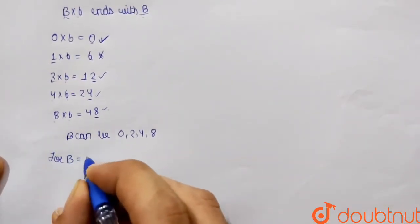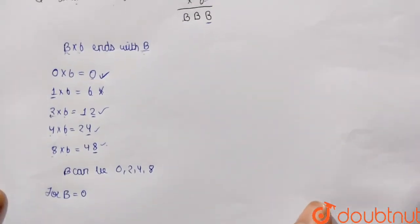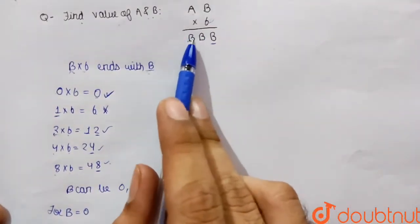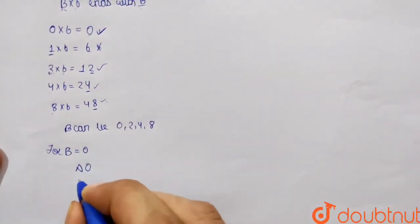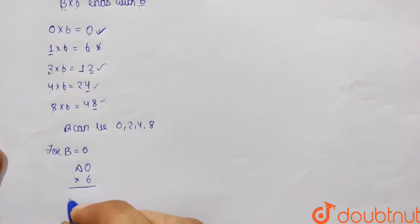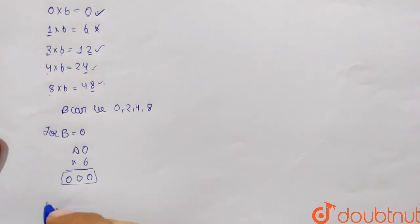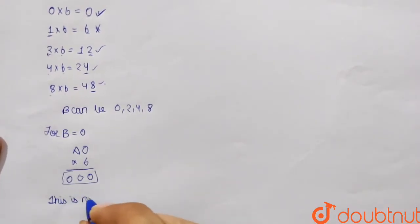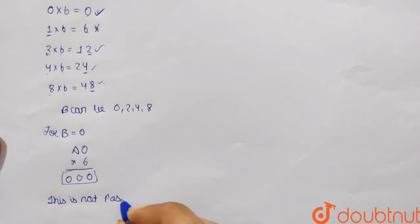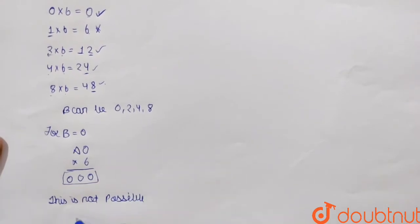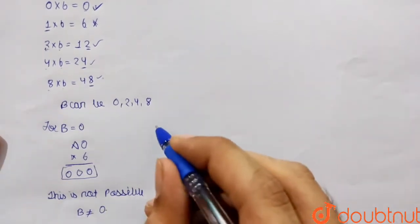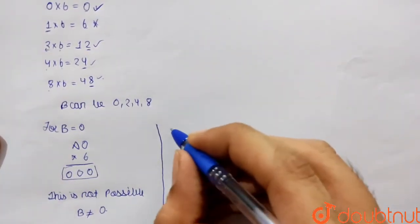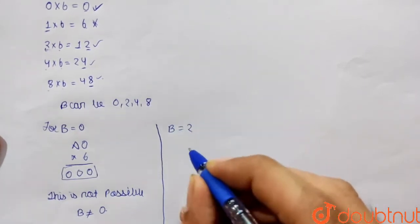Let's check for b equals 0. The condition AB into 6 equals BBB would become A0 multiplied by 6 equals 000. But 000 is not a valid three-digit number, so this is not possible. Therefore b cannot be equal to 0.